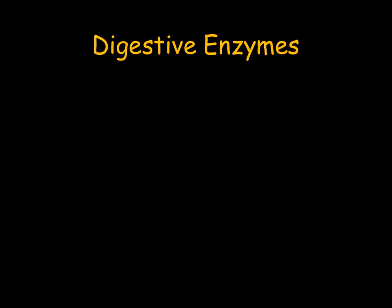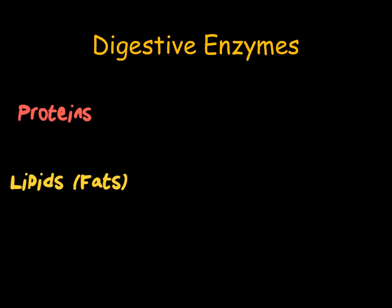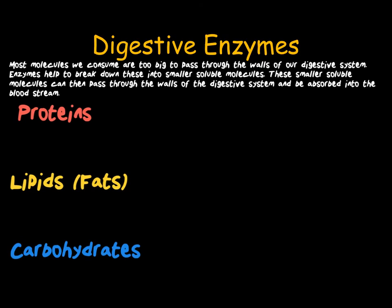As mentioned earlier, there are over 75,000 enzymes in your body, and a large number of these have a role in digestion. The role of enzymes in digestion is essential, as they help to speed up the reactions that break down the large molecules we consume in our food — for example, proteins, lipids, and carbohydrates. These are all very large molecules that are too big to pass through the walls of our digestive system. Therefore, digestive enzymes help break them down into smaller, soluble molecules that can easily pass through the walls of the digestive system and into the bloodstream.